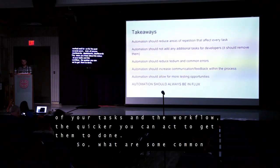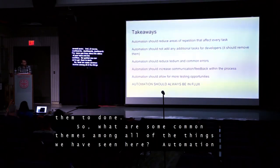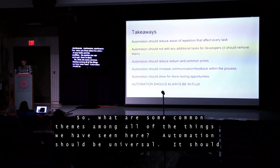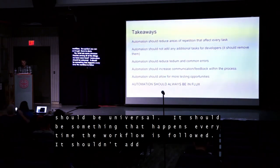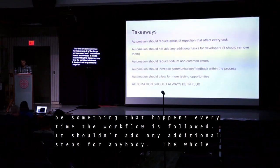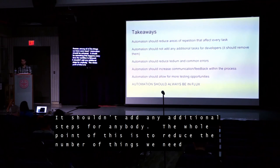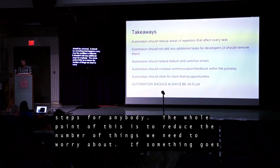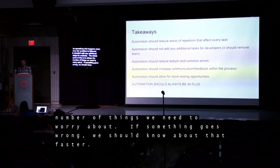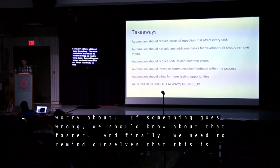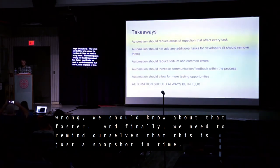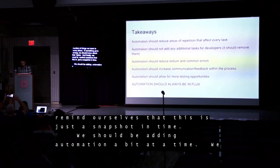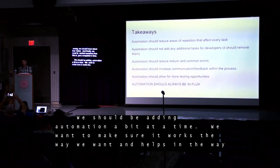What are some common themes among all of the things we've seen here? Automation should be universal — it should be something that happens every time the workflow is followed. It shouldn't add any additional steps for anybody. The whole point of this is to reduce the number of things we need to worry about. If something goes wrong, we should know about that faster. We should be adding automation a bit at a time, making sure it works the way we want and helps in the way we need.